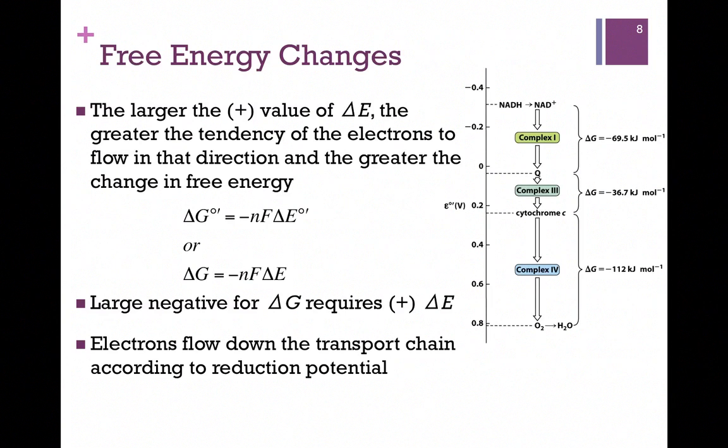How does this relate to a change in free energy? Well, here's our very simple relationship. Whether we're referring to the standard delta G or the actual delta G, it's equal to negative NF delta E. In other words, it's directly related to the reduction potential, but there's that negative sign. So the more positive the value of delta E, then the more negative the delta G. That is, the more likelihood the electrons will be passed in that direction and the more energy will get out of that.